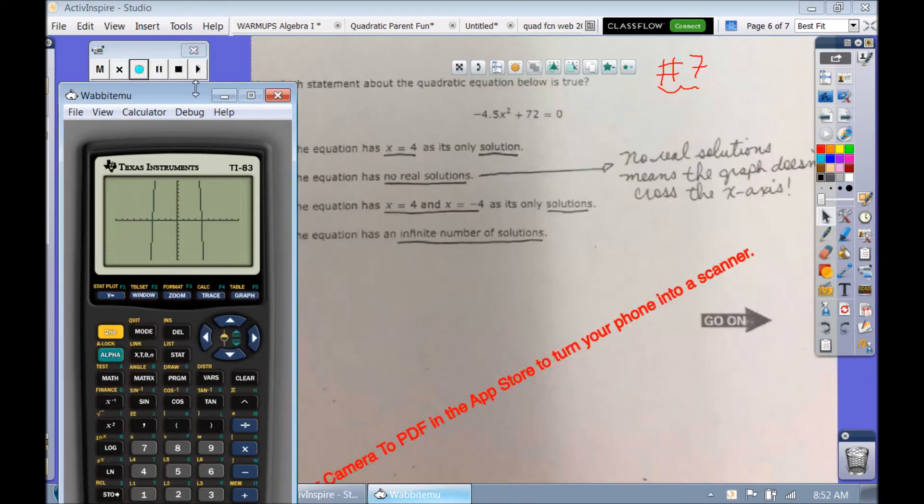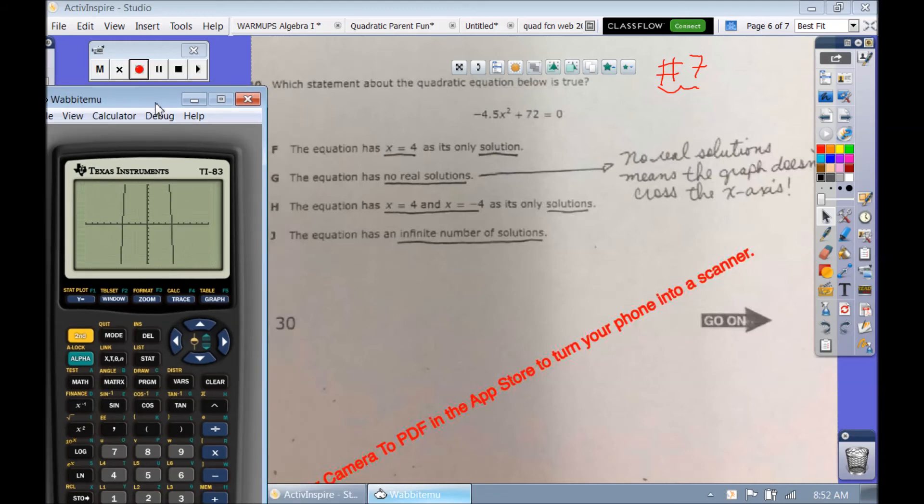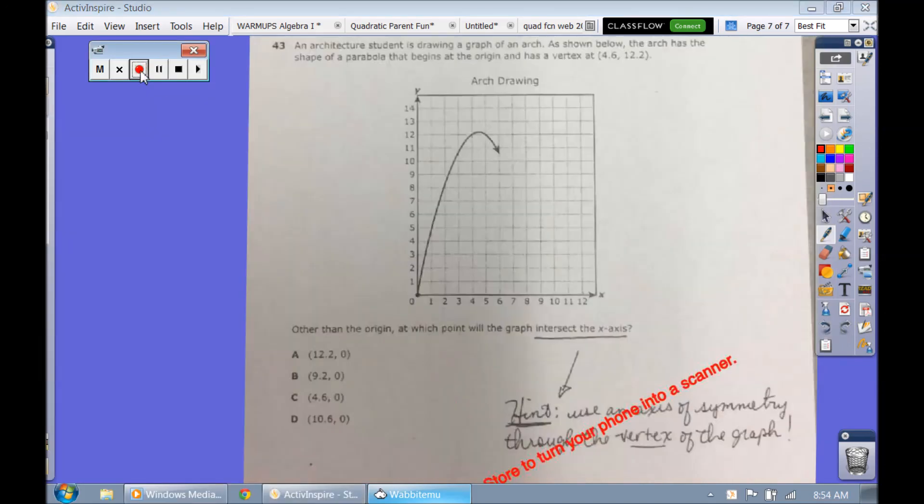All right. Same thing here. Punch this in the calculator, and let's see which one of these is true. The equation has x equals 4 as its only solution. Solutions are where they cross the x-axis. Did it only cross the x-axis at 4? No. Remember what no real solutions mean. That means they don't cross, that the graph doesn't cross the x-axis. And this crosses the x-axis twice. So let's see if it crosses at 4 and negative 4. Yep. You can see right there it goes 4 to the right, which is positive 4, 4 to the left, which is negative 4. So those are our answers where they cross.